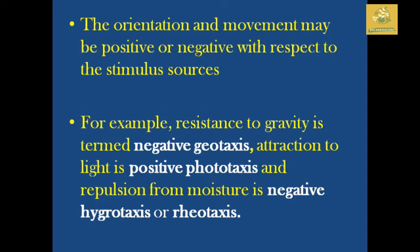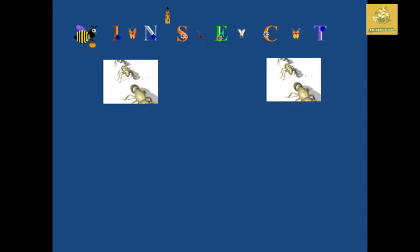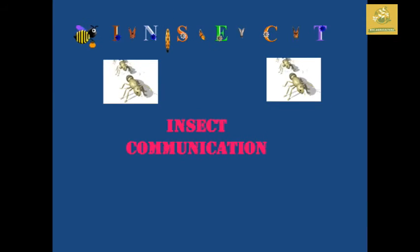This orientation of movement may be positive or negative with respect to the stimuli of particular insects. For example, resistance to gravity is termed negative geotaxis, attraction to light is known as positive phototaxis, and repulsion from moisture is known as negative hygrotaxis or rheotaxis. These are the different names for different types of stimuli responses.